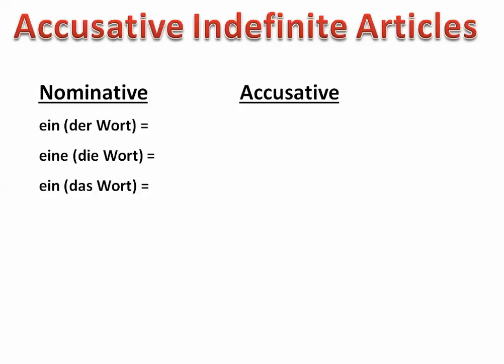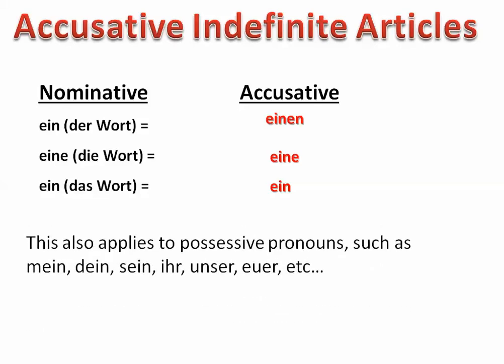The indefinite article is another way of saying 'a' or 'an.' In the nominative, when it's a subject, if it's a masculine or neuter noun you would use ein — 'ein Hund,' 'ein Auto.' However, if it becomes a direct object or comes after an accusative preposition and it's a masculine noun, it would be einen — for example, 'ich sehe einen Hund,' 'ich sehe ein Auto.' This also applies to the possessive pronouns — for example with mein, you would say meinen: 'du siehst meinen Hund' or 'du siehst mein Auto.'